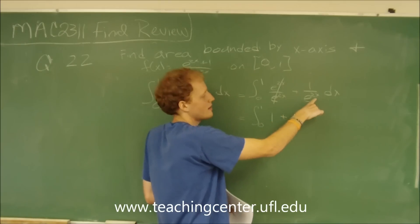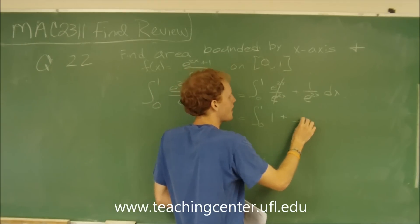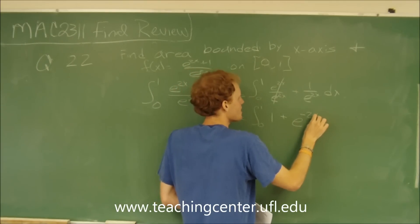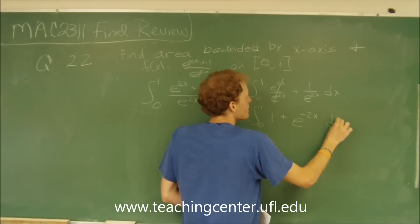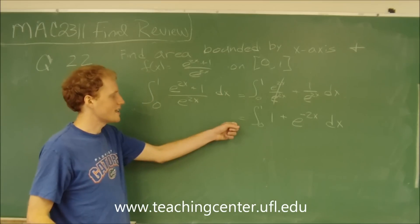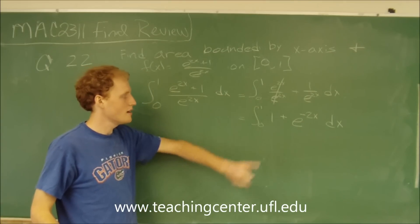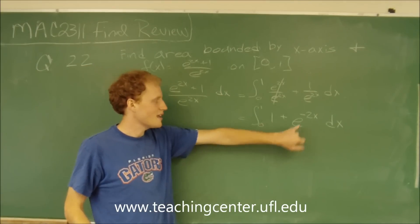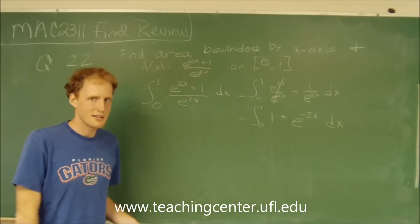We can move the e to the 2x up and have a negative exponent. So our final integral is 0 to 1 of 1 plus e to the negative 2x.